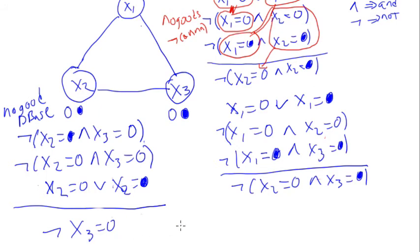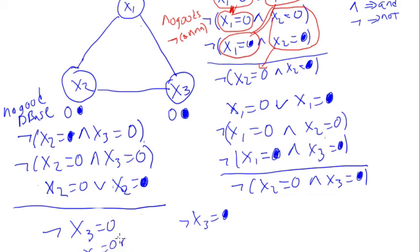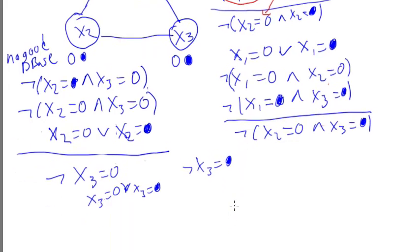So now we know it's no good if x3 is white. By a similar process, you can also produce: it's no good if x3 is blue. At which point the database contains both of these, and you also know that x3 is white or x3 is blue. These three statements together form a contradiction, and you'll know there is no possible solution.